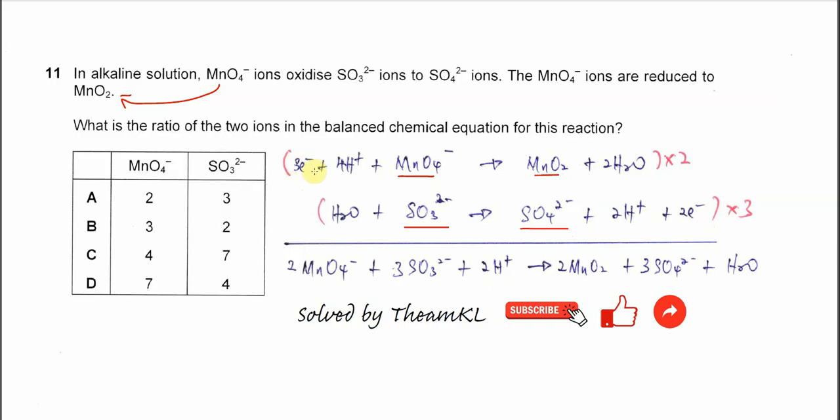Okay, after times 2 and times 3, we can combine the equation. Because in the question is mentioned alkaline condition or alkaline solution, but the one I shown here is in acidic condition. If you want to convert to alkaline condition, you need to add 2 hydroxide on both sides to convert the acidic condition to alkaline condition. Then the hydrogen ions will combine with hydroxide to form H2O. But it's actually not necessary to do this step in order to get the answer.